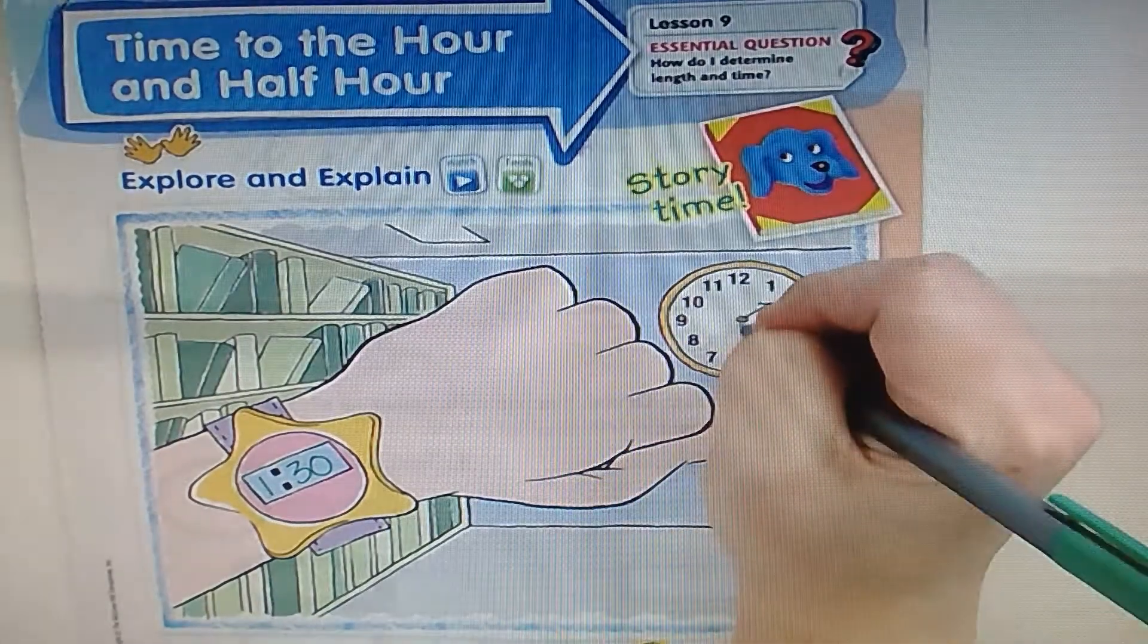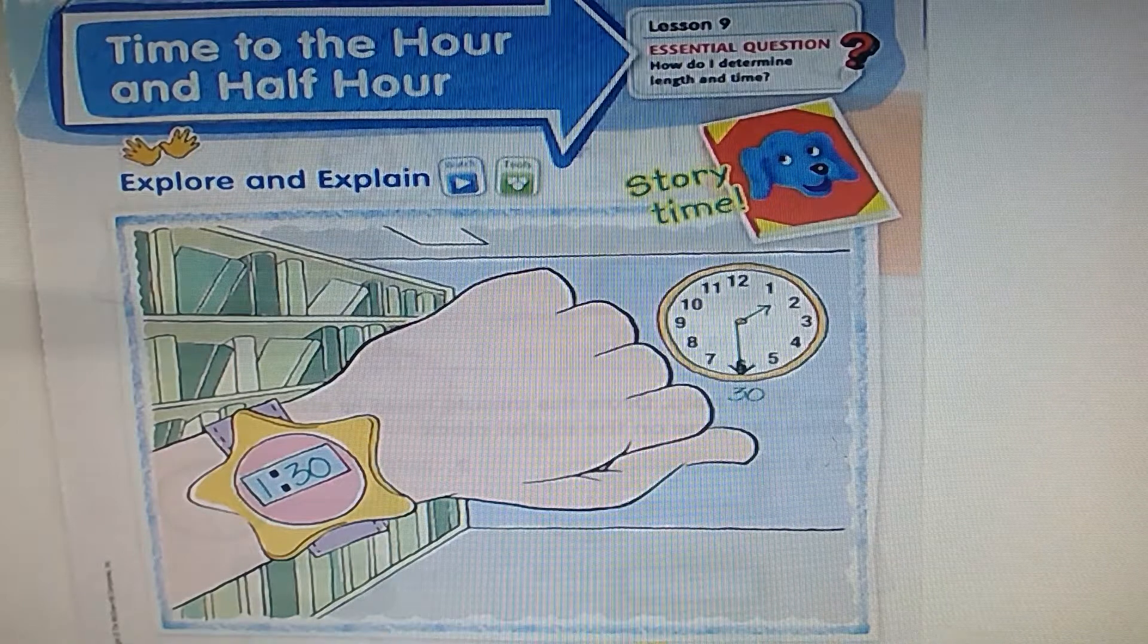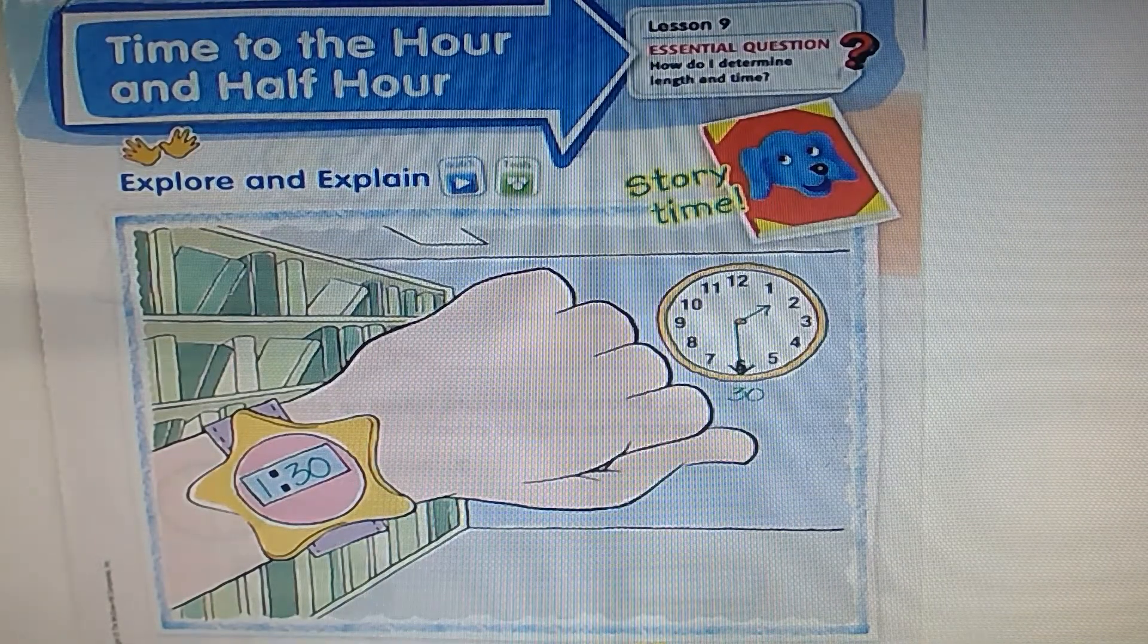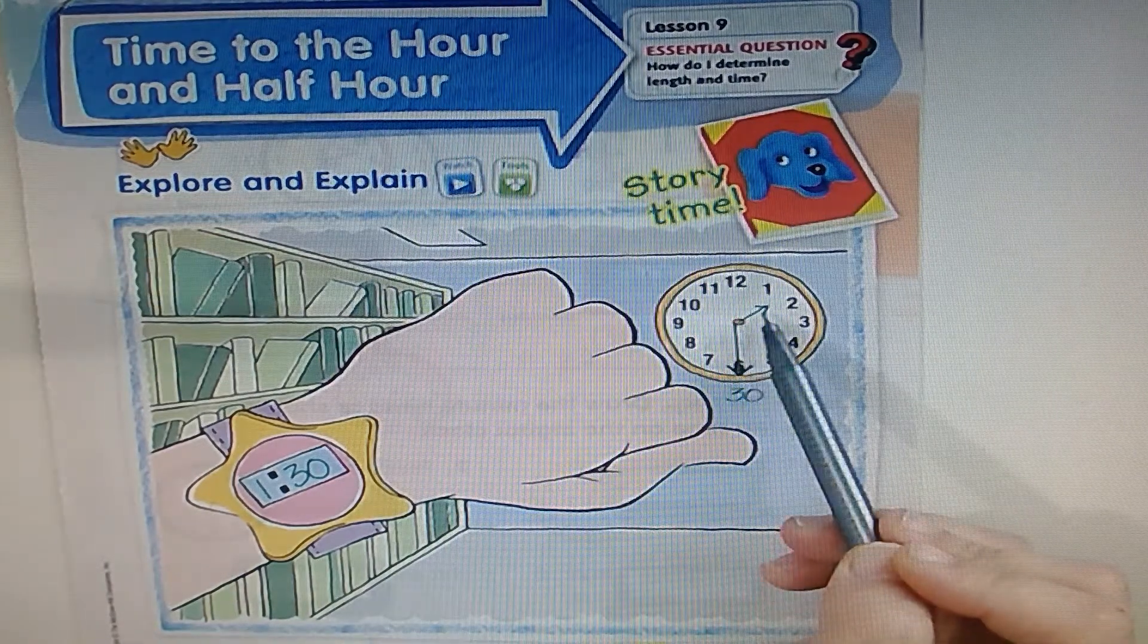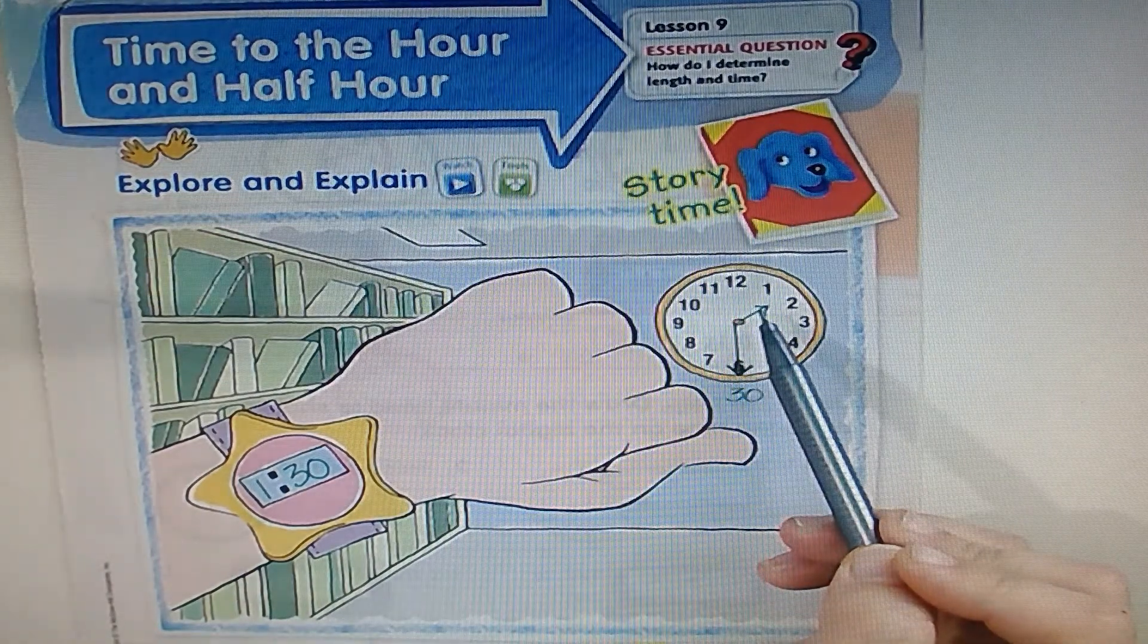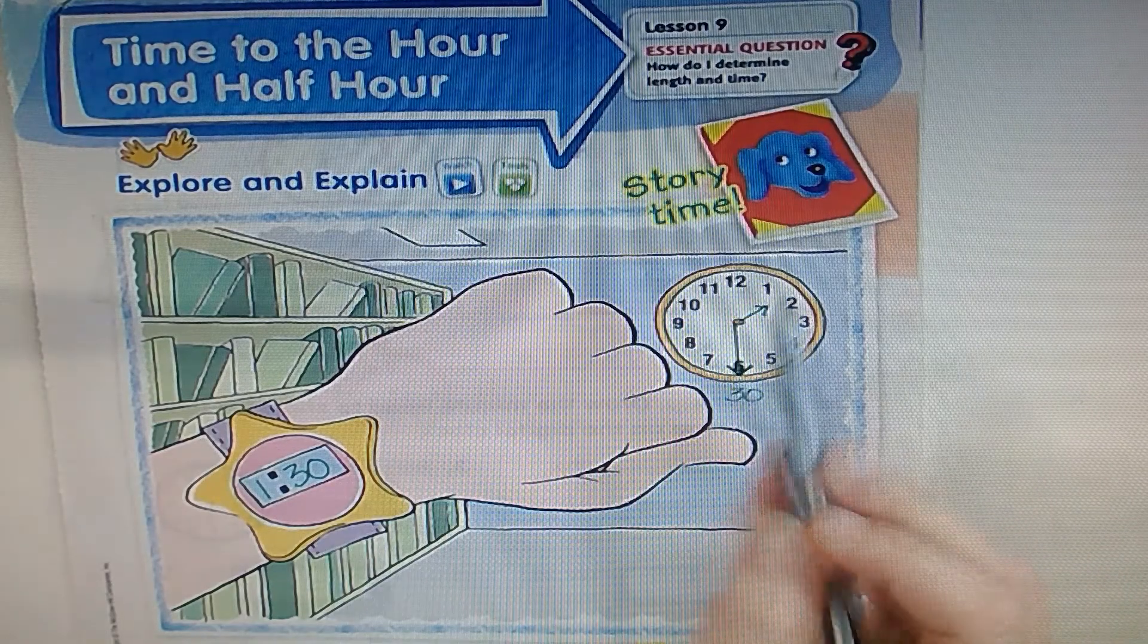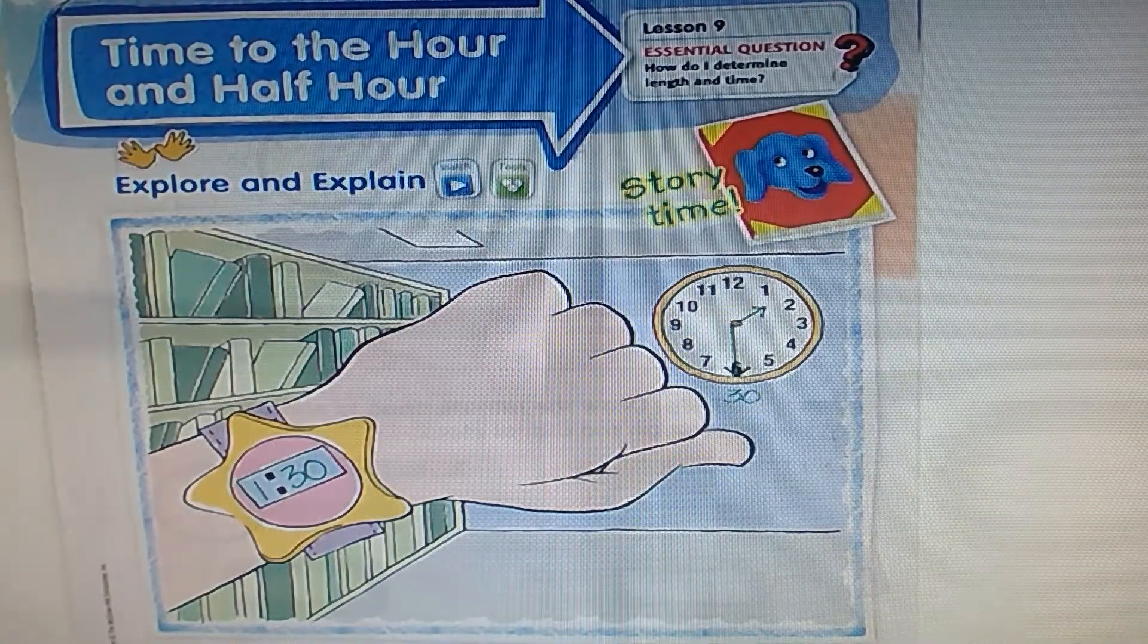So we're going to have the minute hand pointing all the way to the edge of the clock to show that it is the longer hand. When you're drawing times for your teacher, it's important that you do this. The hour hand only goes halfway, it doesn't even touch the numbers. The minute hand always goes to the edge. That way the teacher can see that you know the difference between the hour hand and the minute hand.